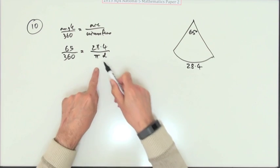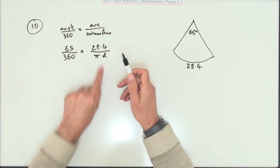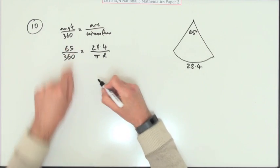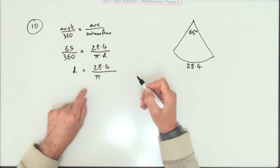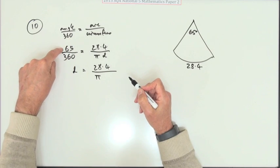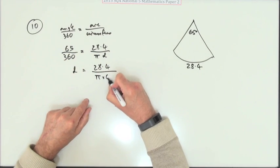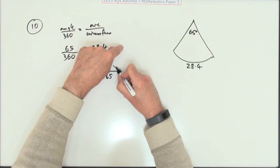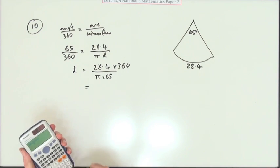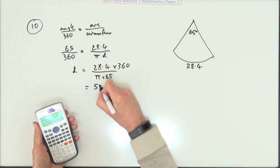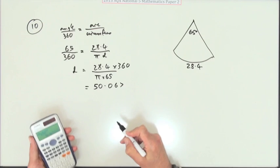So it's this part I don't know. Well, I know all the rest of the numbers, so just rearrange it to read d equals. Cross multiplying, take d up to the top - that will leave the 28.4 and the pi behind. Take the 65 down and the dividing 360 up, and then press the buttons and you get 50.067.